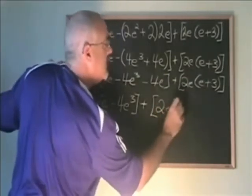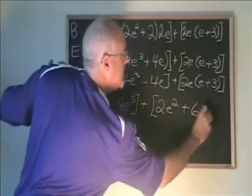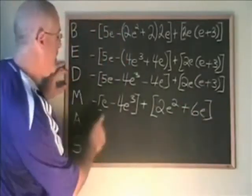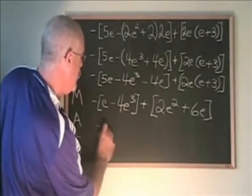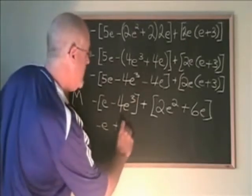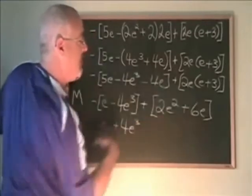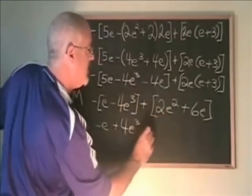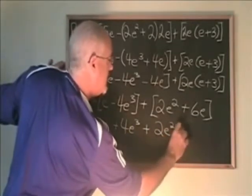So I get 2e squared, and 2e plus 3, which will give me 6e. Multiplying the negative 1 across this bracket gives me negative e, and the minus minus means plus 4e cubed.